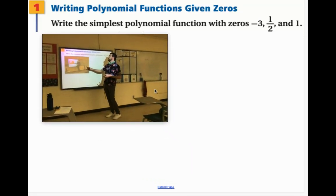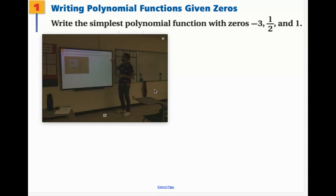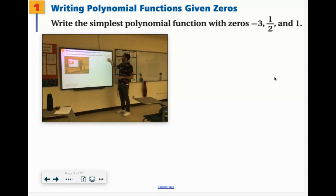Write the simplest polynomial function with the zeros negative 3, 1 half, and 1. Now remember, if negative 3 is a zero, that means if it was factored, one of the factors would say x plus 3.